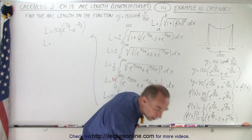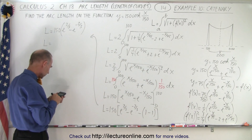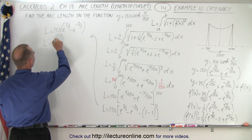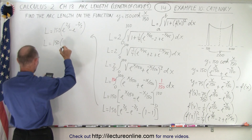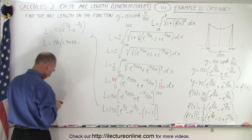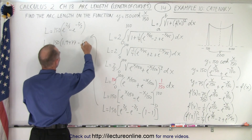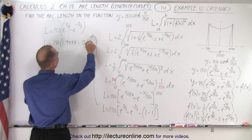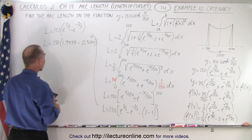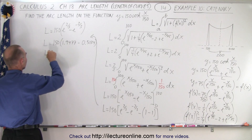Using a calculator: e to the 2 thirds minus e to the minus 2 thirds gives approximately 0.5134... times 150.